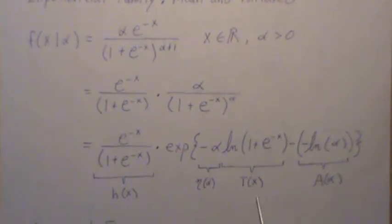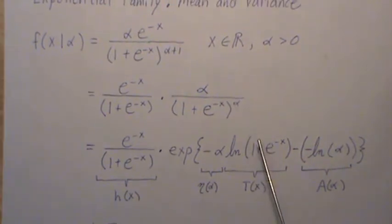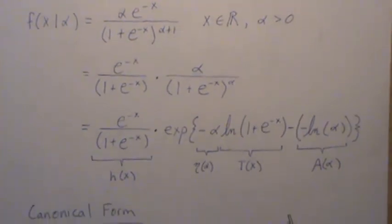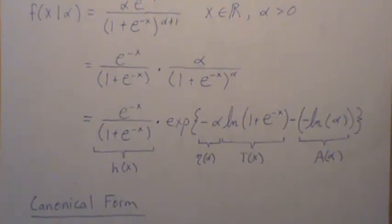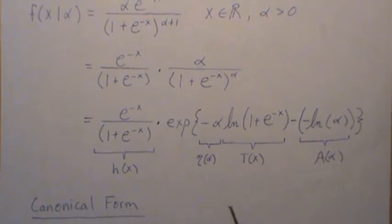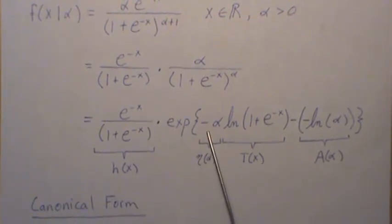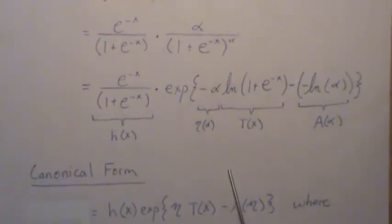And this here we generically call T of x. It's a sufficient statistic and it's complete for alpha. Now, we want to put it in canonical form. So here there's a negative and we just really want to call this some parameter and we'll call it eta.